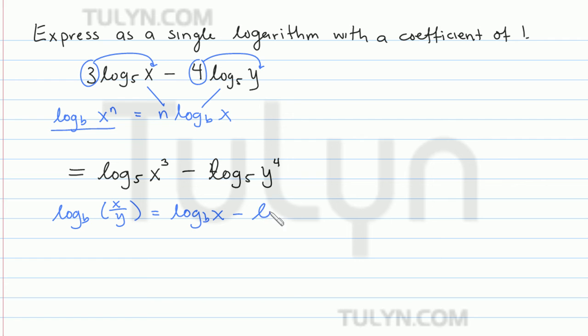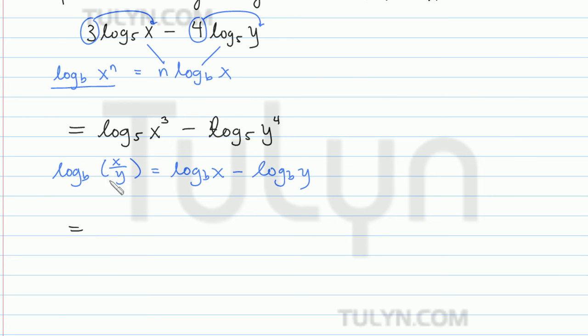So this is going to be log base b of x minus log base b of y, which is what we have. So what we can do is rewrite this x cubed as x cubed over y to the 4th as the quotient, in other words.